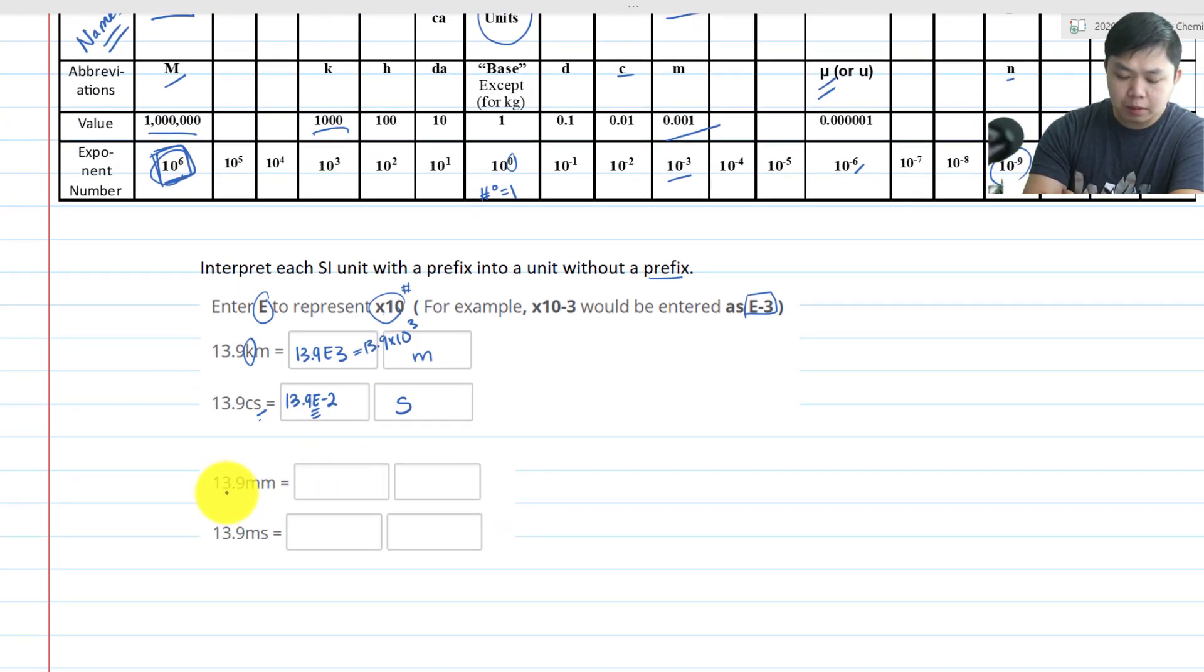Here we have 13.9 ML. What's this little M stand for? That's not the same thing as mega. That is for milli. So in this case, we have 13.9. What's milli? 10 to the negative 3. So E negative 3 M. Now over here, we have 13.9 M second. That's the same thing milli. So we have 13.9 E to negative 3 M second.